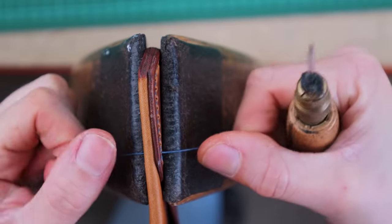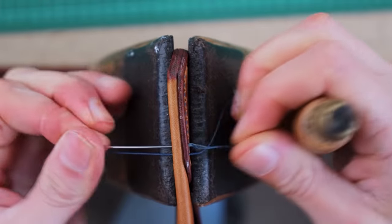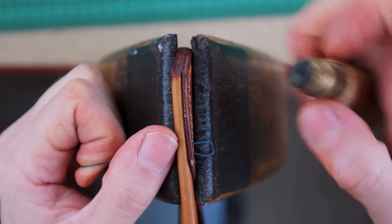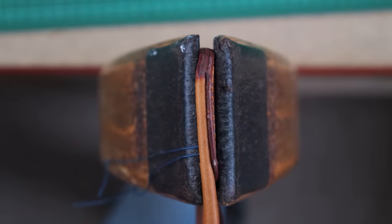And then once you get to the end you want to do one and a half back stitches so both your threads are on the back side of your card wrap. And then you can use some little nippers and cut them off flush to the card wrap.